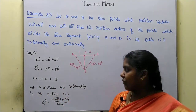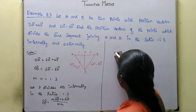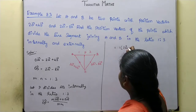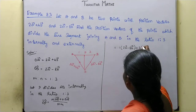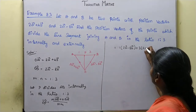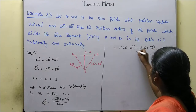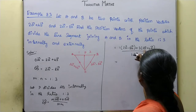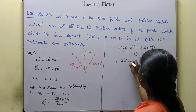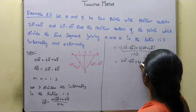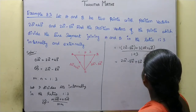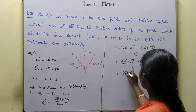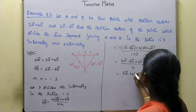Substituting the values: m is 1, so 1 into OB vector which is 2a vector minus 8b vector, plus n is 3, so 3 into OA vector which is 2a vector plus 4b vector, divided by 1 plus 3. That gives 2a minus 8b plus 3 into 2, which is 6a vector plus 12b vector, by 4.